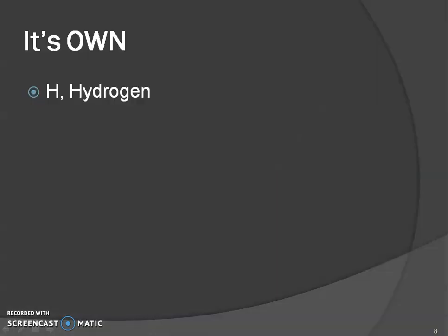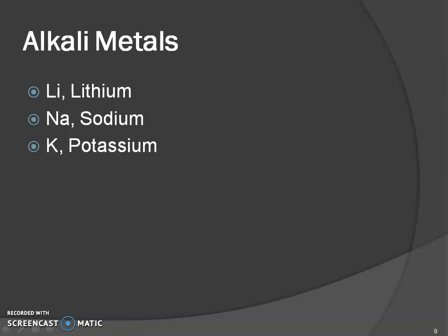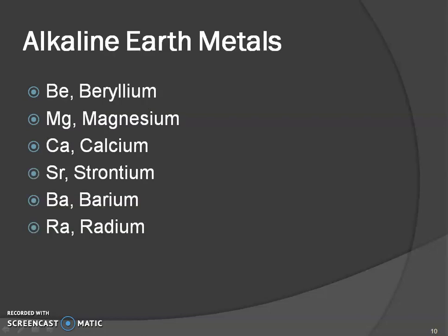Hydrogen is its own group: H — Hydrogen. Alkali metals: Li — Lithium, Na — Sodium, K — Potassium. Alkaline Earth metals: Be — Beryllium, Mg — Magnesium, Ca — Calcium, Sr — Strontium, Ba — Barium, Ra — Radium.